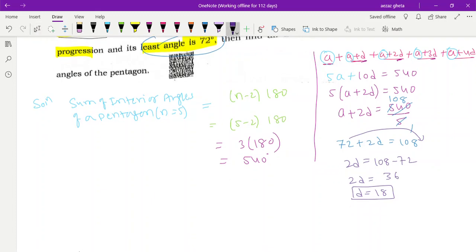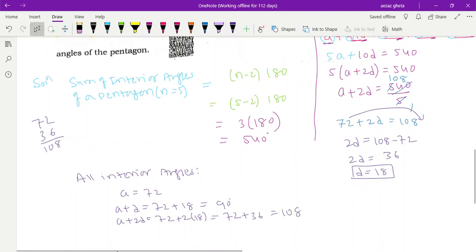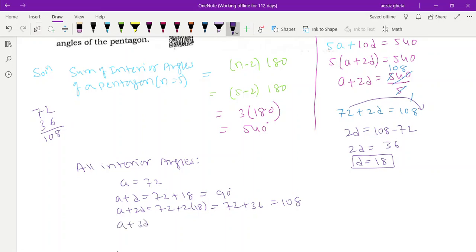All interior angles: a equals 72. a plus d equals 72 plus 18, which is 90. a plus 2d equals 72 plus 2 into 18, that's 72 plus 36, which is 108. a plus 3d equals 72 plus 3 into 18.